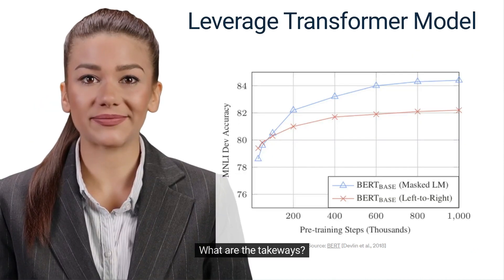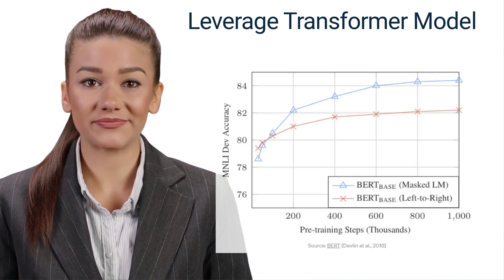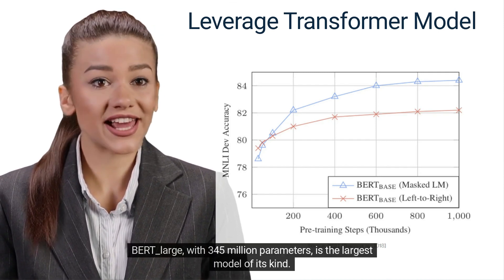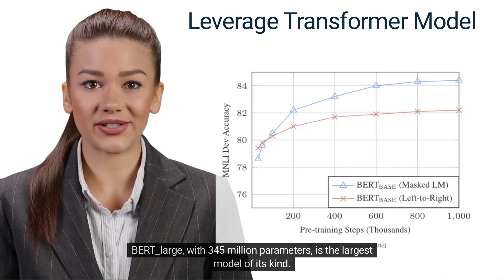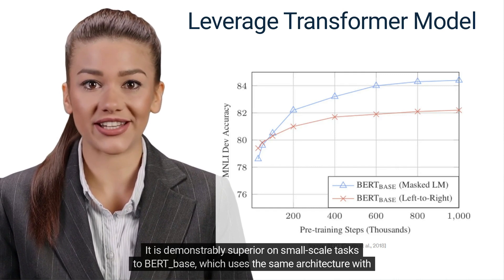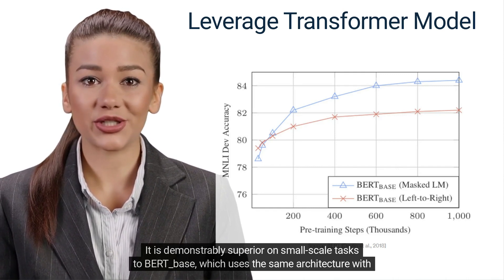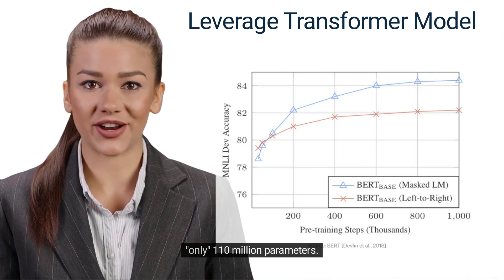What are the takeaways? Model size matters, even at huge scale. BERT_large, with 345 million parameters, is the largest model of its kind. It is demonstrably superior on small-scale tasks to BERT_base, which uses the same architecture with only 110 million parameters.